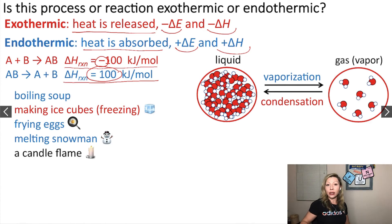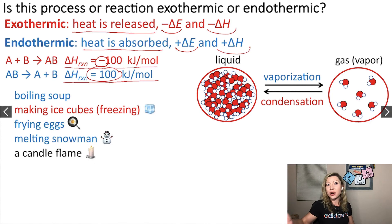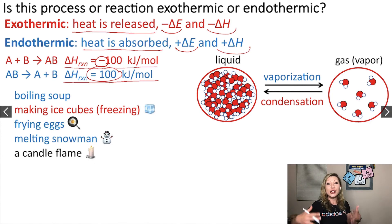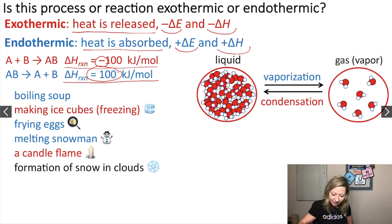How about the candle flame? This is a process where you are burning something, and generally in case of combustion processes you are generating heat. So heat is going to be released. This is going to be an exothermic process.